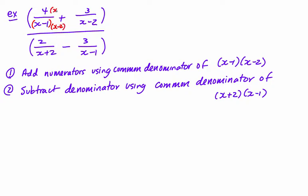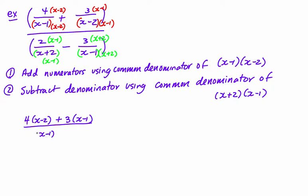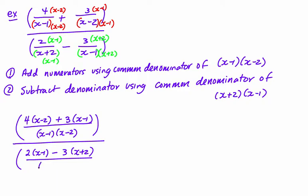This is the method I'll use first. This term will multiply by (x − 2) on the top and bottom, and this term will multiply by (x − 1) on the top and bottom. On the bottom, this one multiplies by (x − 1), and over here this term multiplies by (x + 2). So what I end up getting is 4(x − 2) and 3(x − 1) on the top over the common denominator (x − 1)(x − 2), and that all gets divided by 2(x − 1) minus 3(x + 2) all divided by (x + 2)(x − 1).